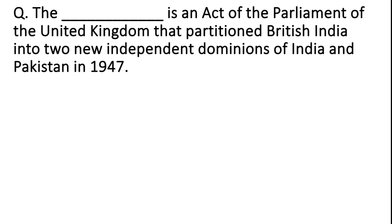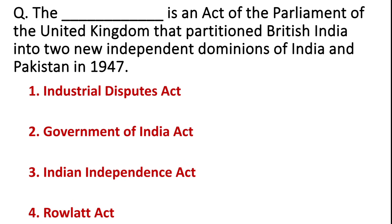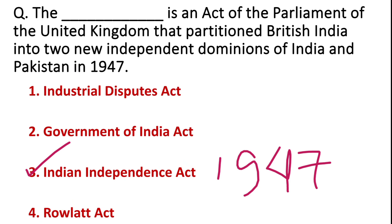Which act of the Parliament of the United Kingdom partitioned British India into two new independent dominions of India and Pakistan in 1947? Options: Industrial Disputes Act, Government of India Act, Indian Independence Act, or Rowlatt Act. The correct answer is the Indian Independence Act. It was due to the Indian Independence Act 1947 that India and Pakistan were divided.